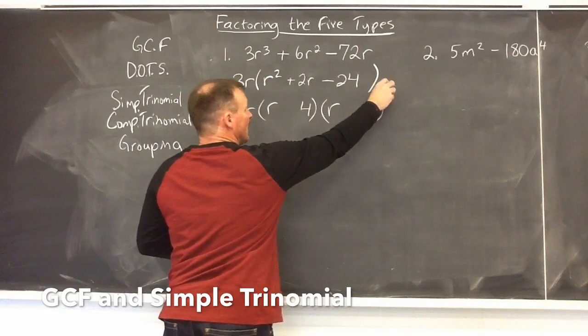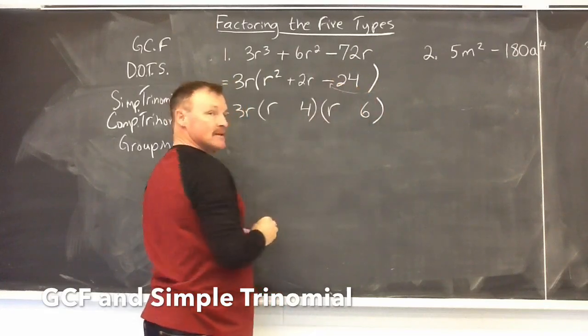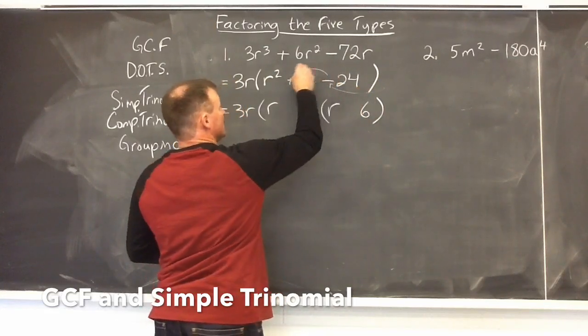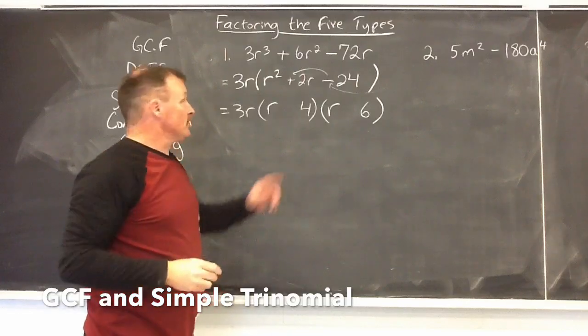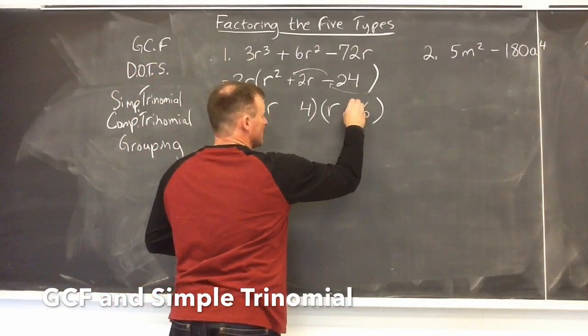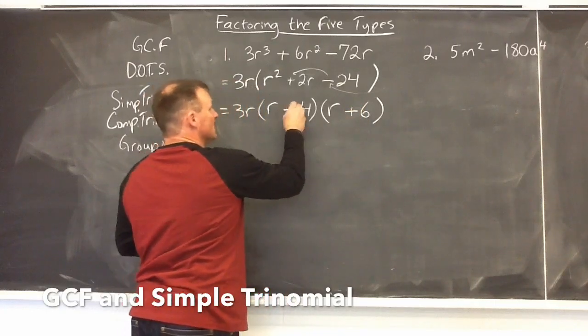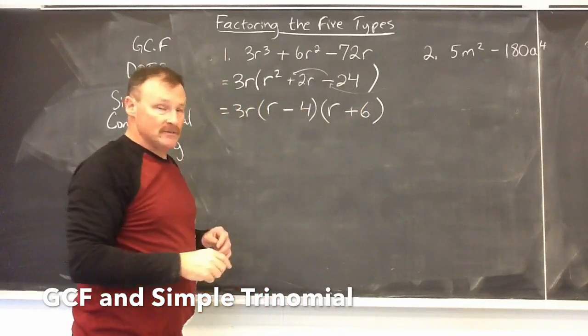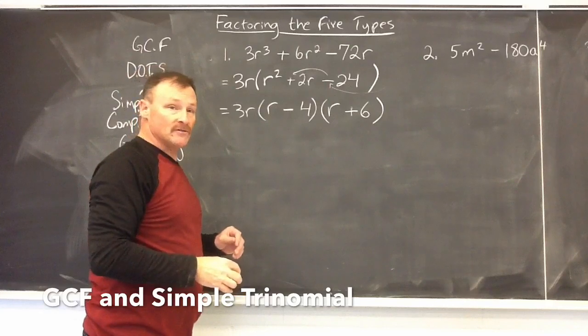Moving from the right again, a negative here says that the signs are going to be different, and this tells me the sign on the bigger of the two numbers. In this case it's a plus. So the 6 is going to get a plus and the 4 is going to get the minus. Now you can multiply this out again to be sure that you have the right factoring for this.